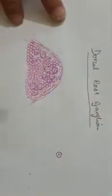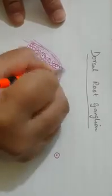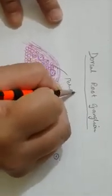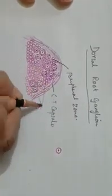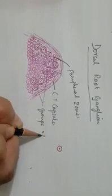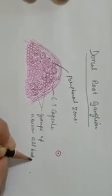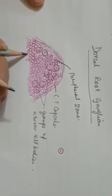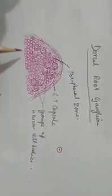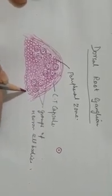Now we will label the diagram. This is the connective tissue capsule. This is the peripheral zone containing groups of neuron cell bodies. The portion which has only nerve fibers is the medullary zone, or central zone.